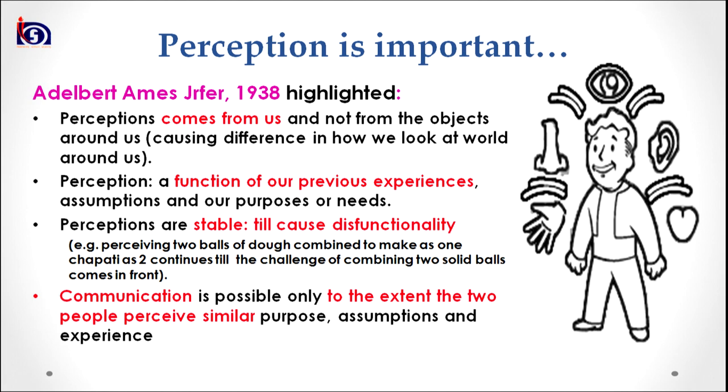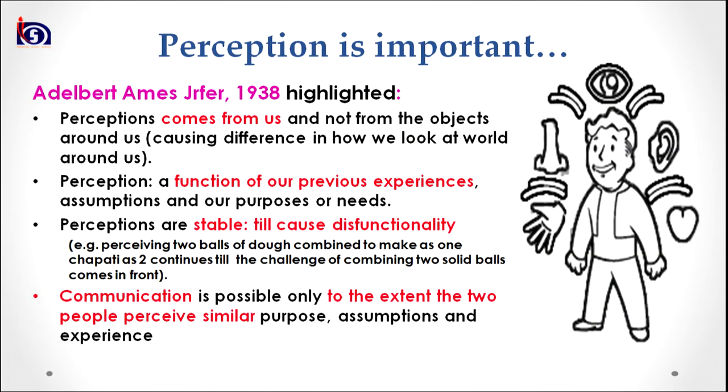The second thing Zerper proposed about perception is that it is a function of our previous experiences, assumptions, and our purposes or needs. The third thing Zerper proposed is that perceptions are relatively stable until they cause dysfunctionality. Until we have problems with our perception in solving day-to-day problems, we carry on with our previous perceptions. But as dysfunctionality comes, we try to change our perception and look at the world in different ways.